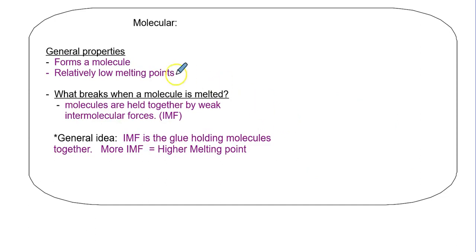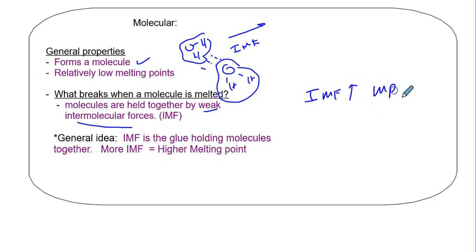Molecular substances form a molecule, a uniquely held item that can be all by itself as a gas or comprise a solid. What breaks when you melt a molecular substance solid? Molecules are held together, so what breaks? Weak intermolecular attractions like glue. So as your intermolecular forces go up, your melting points go up.